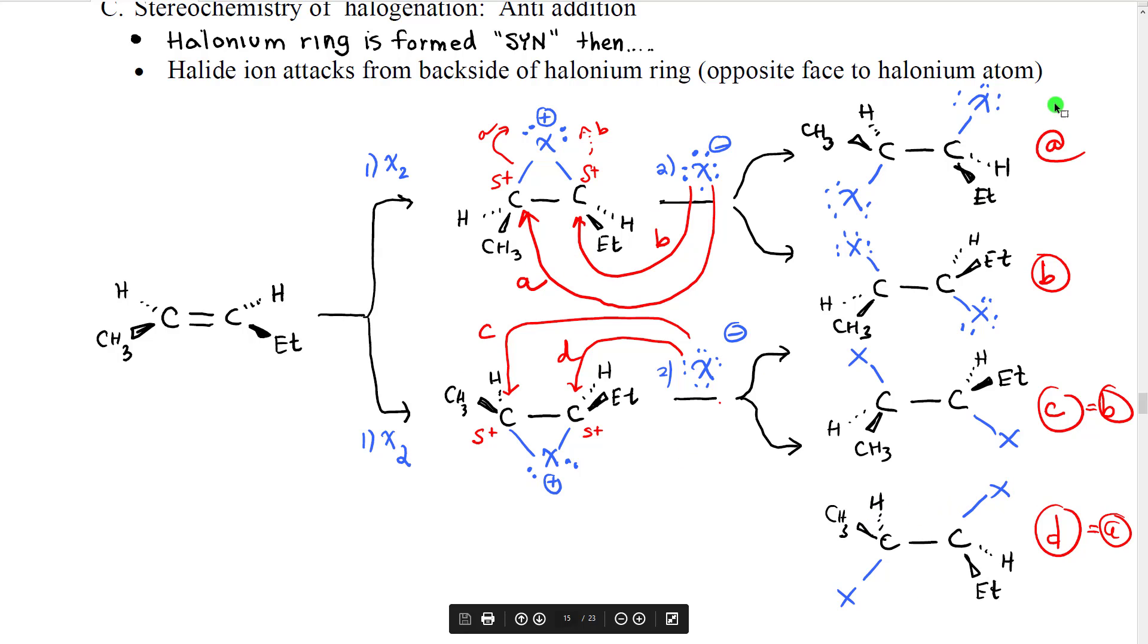I've labeled each approach with a letter, and then matched those letters to the products that we get. And if you look carefully, you can see that product B and product C are identical, and product A and product D are identical. So effectively, we get two stereoisomeric products that, with regard to the two carbons of the former double bond, are mirror images of each other. Those will be enantiomers if there are no other chirality centers in the molecule.